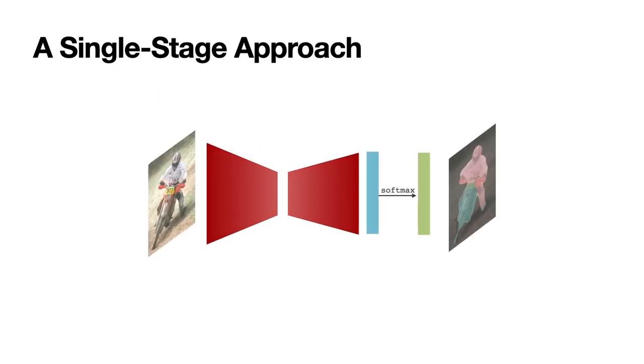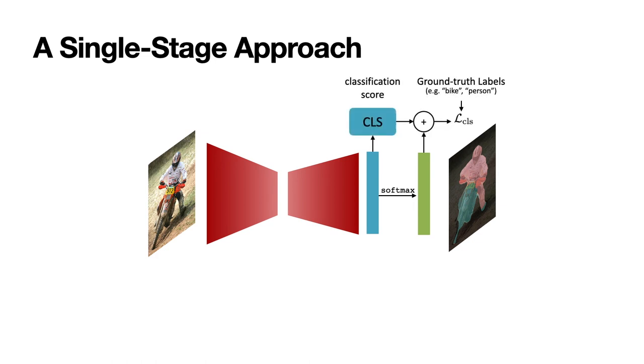We enable segmentation-aware training on image labels by three simple components. First, we compute classification scores without biasing the mask size. Second, a recurrent module refines segmentation masks for self-supervision.